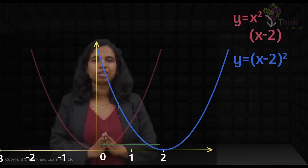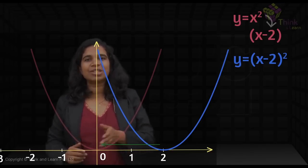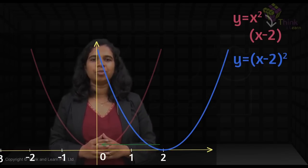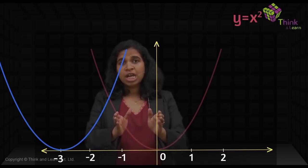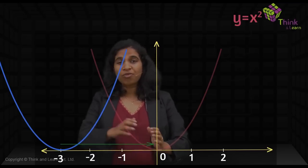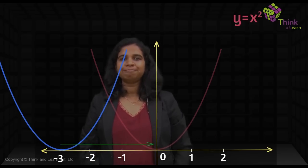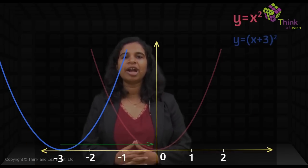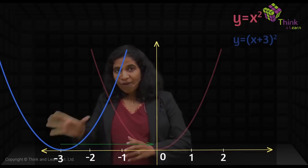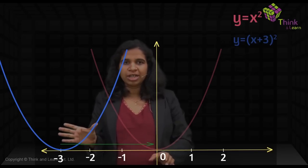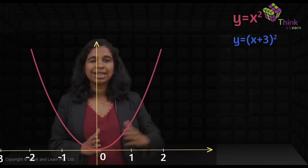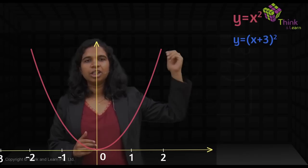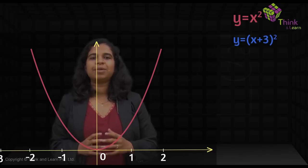What if we move the parabola to the left by three units instead? To bring the blue parabola back to its original position, I need to move it right by three units. Right is positive, so instead of x I write x + 3. The equation becomes y = (x + 3)².